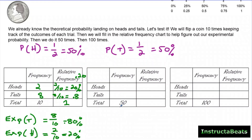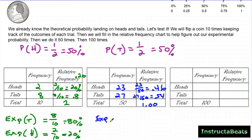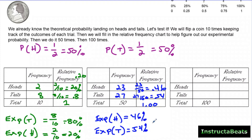Now we've flipped our coin 50 times, and we had 23 heads and 27 tails. Our relative frequency was 23 over 50, which is 46 hundredths, and our relative frequency for tails was 27 over 50, which was 54 hundredths. These add up to 1. Our experimental probability for heads after 50 trials was 46%, and our experimental probability for tails is now 54%. You can see that with more trials, our numbers are getting closer and closer to what we expected — our theoretical probabilities.